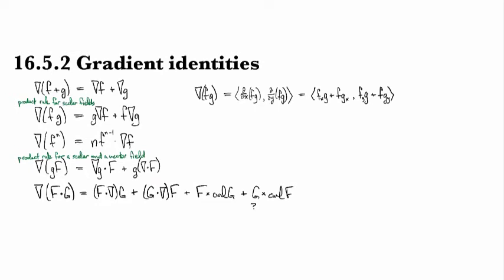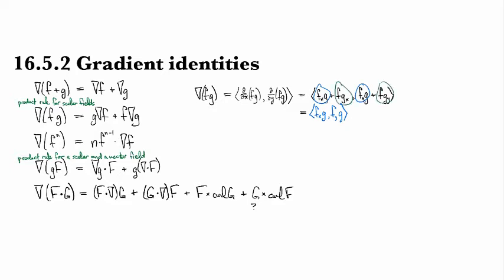And then I can split these guys apart. So let's see, if I gather these parts into one vector, then I have f_x g, f_y g as my components. And if I gather these ones into the other vector, then I have f g_x, f g_y.